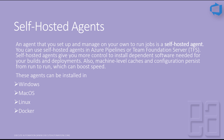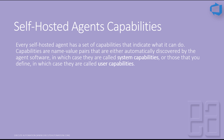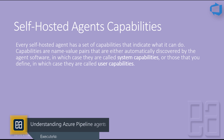Every self-hosted agent has a set of capabilities indicating what it can do. Capabilities are name-value pairs that are either automatically discovered by the agent software — called system capabilities — or defined by you, called user capabilities.